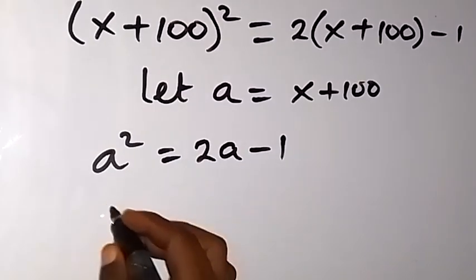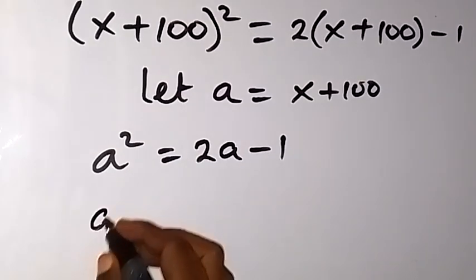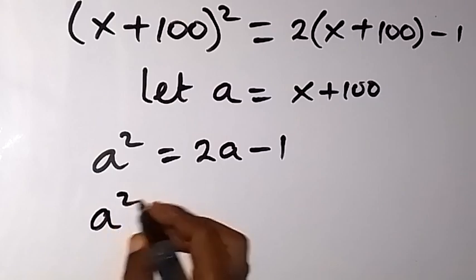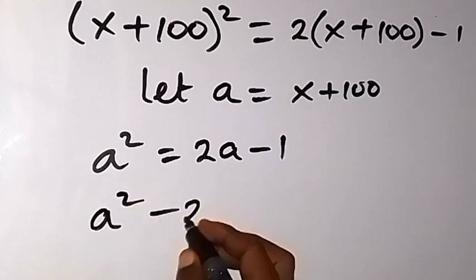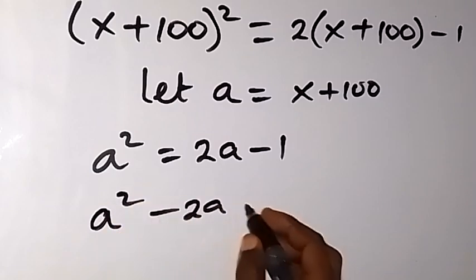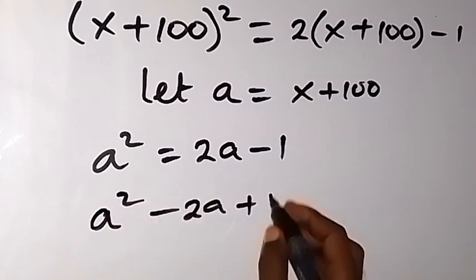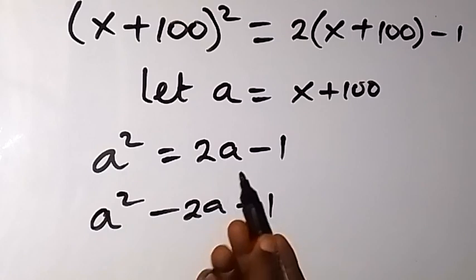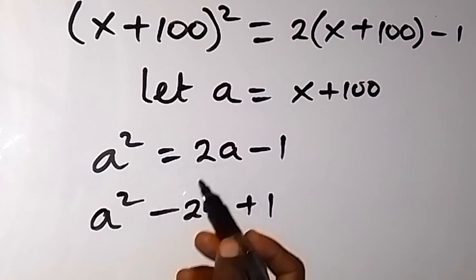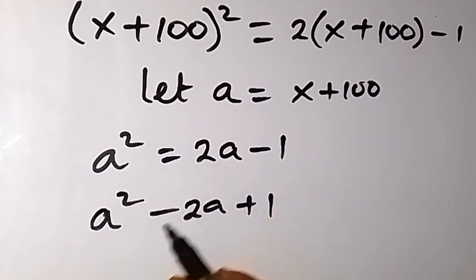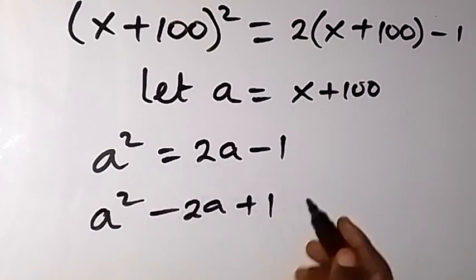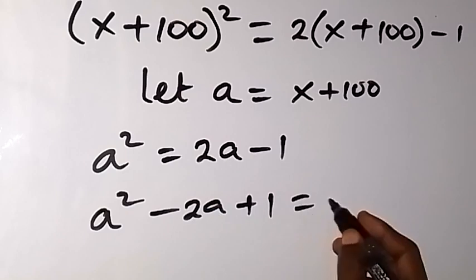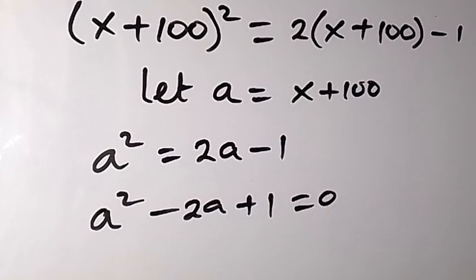We use this to form an equation by bringing everything to one side, so this becomes a² minus 2a plus 1 equals 0. When the 1 comes over it becomes plus, and 2a becomes minus 2a.